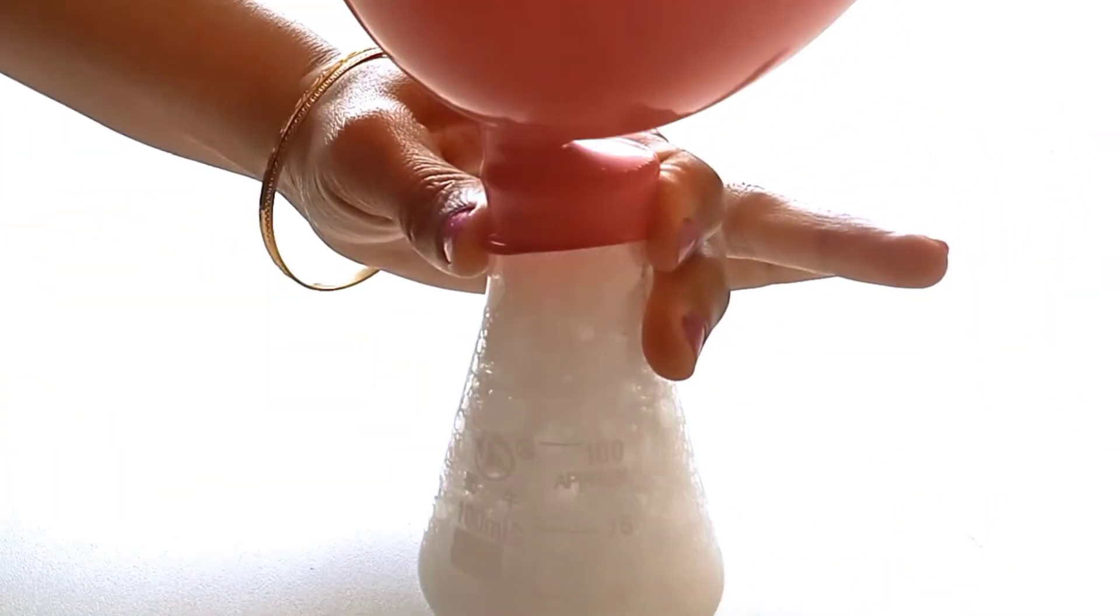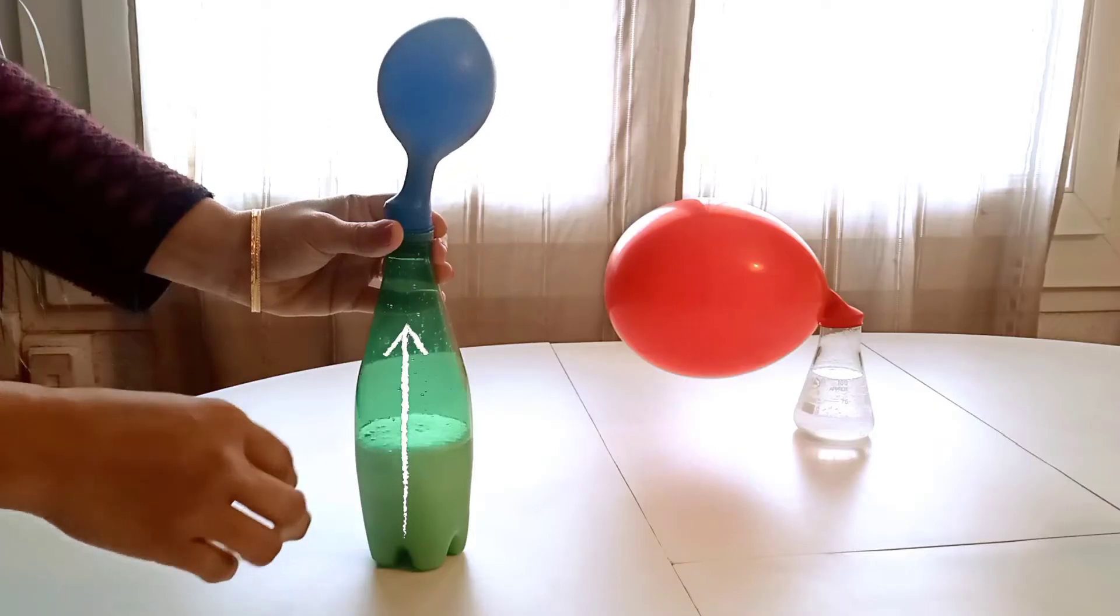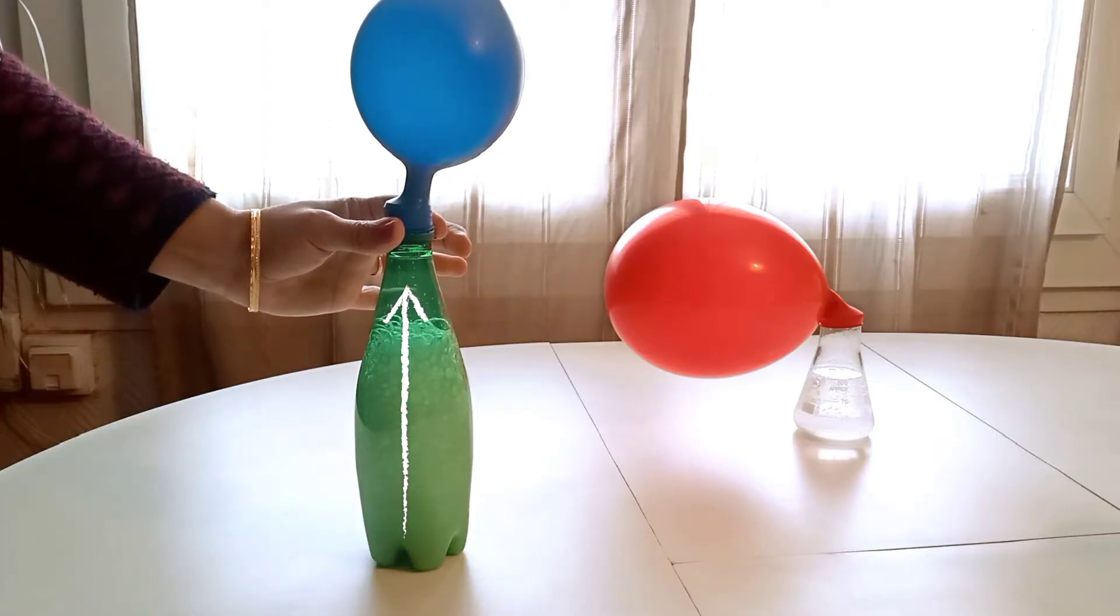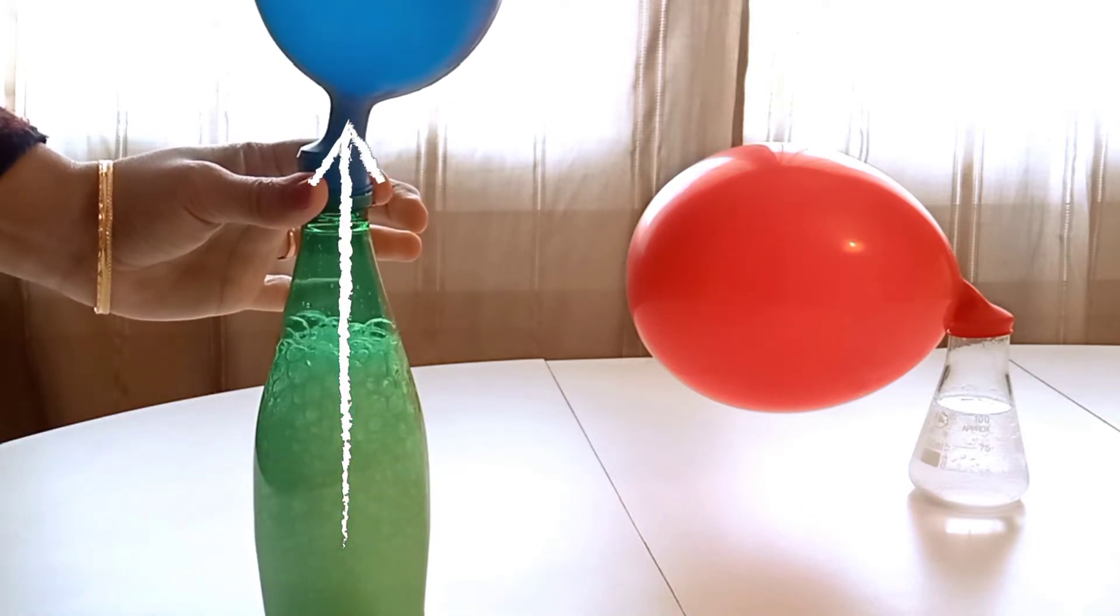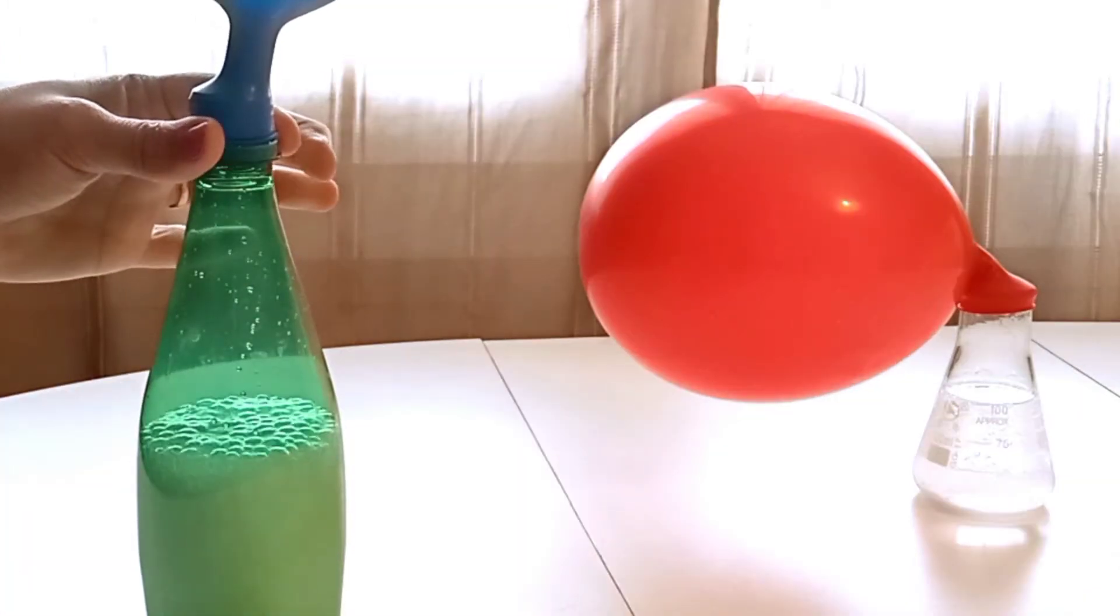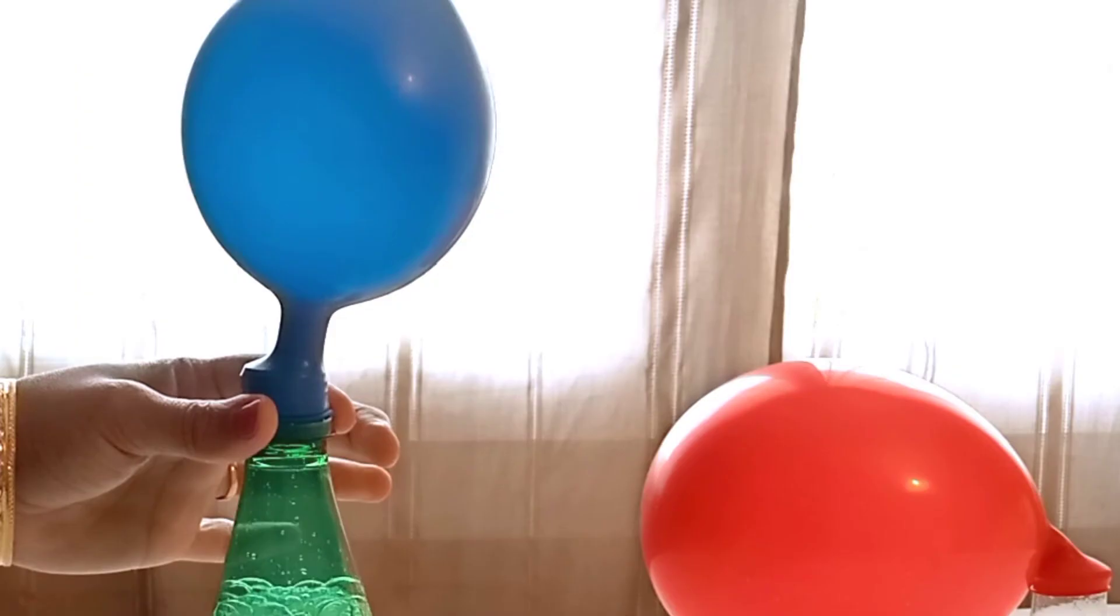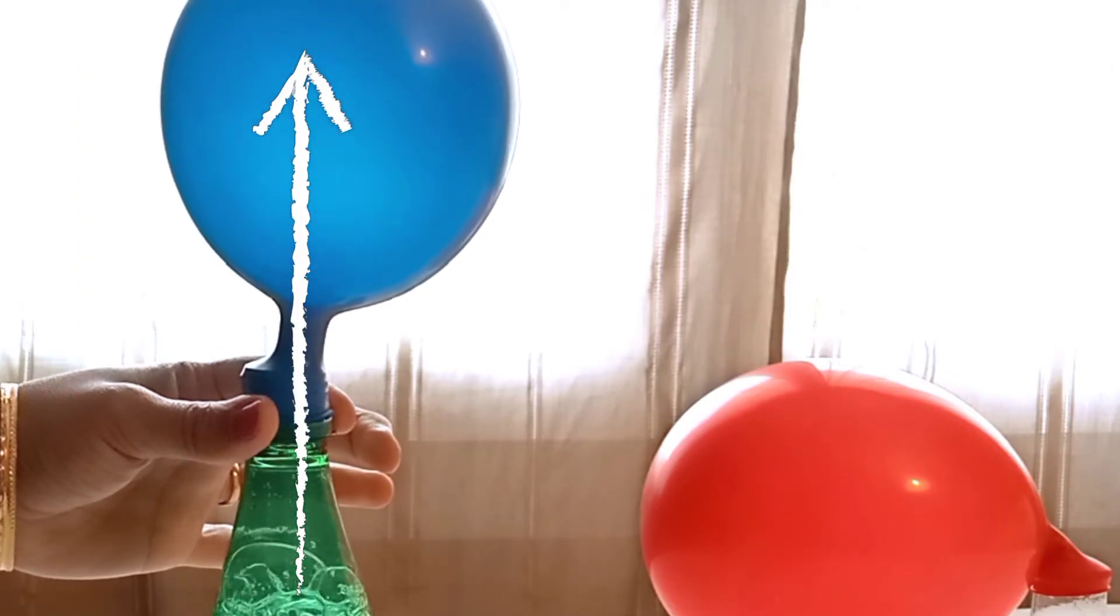As the gas begins to expand, it tries to leave the flask. Then it goes up into the balloon because of the tight seal we have created. Since there is nowhere for the gas to go out, the gas pushes against the walls of the balloon.